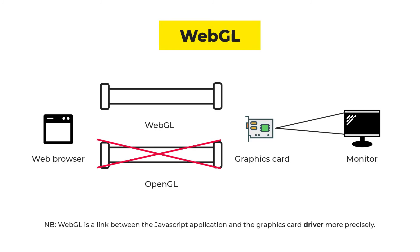WebGL — as mentioned, OpenGL serves as a communication channel between an application written in a certain programming language and the graphics card. Web browsers weren't able to run OpenGL until March 2011, which is the date of the initial release of WebGL. WebGL is merely a lightweight version of OpenGL known as OpenGL ES that we can run on web browsers.